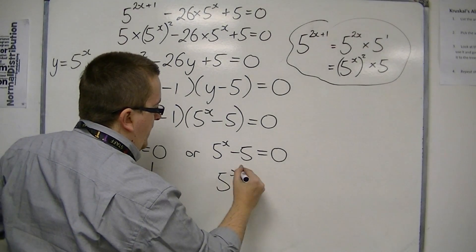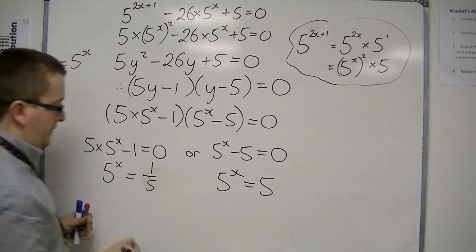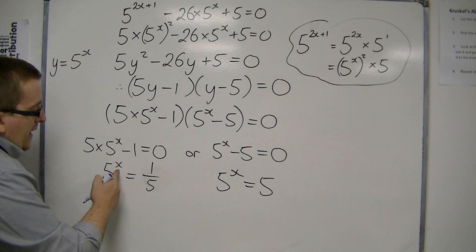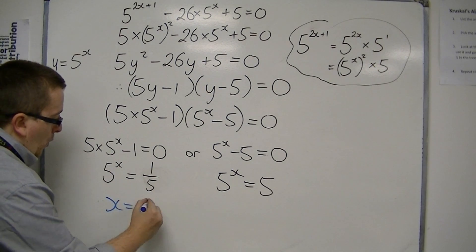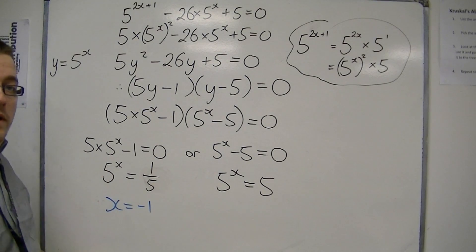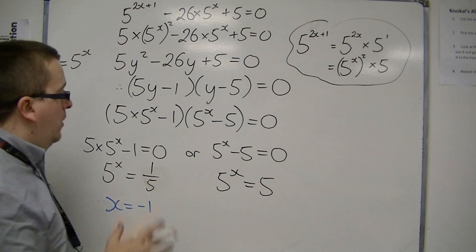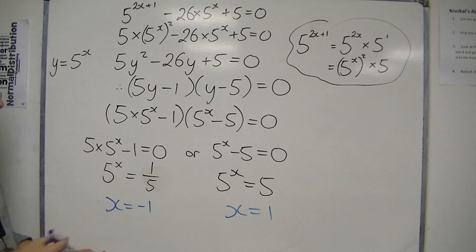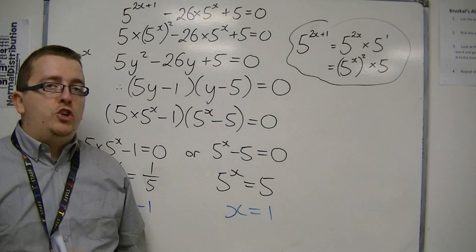On the right-hand side, I've got 5 to the x is equal to 5. So as I hinted, x must be minus 1, because 5 to the minus 1 is 1 over 5. Or x must be 1, because 5 to the 1 is 5. So plus or minus 1 are the solutions to the original problem.